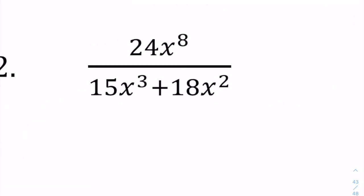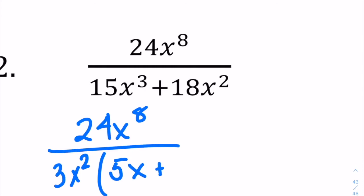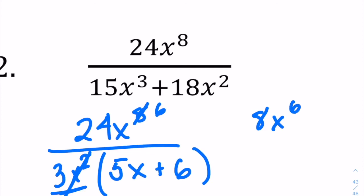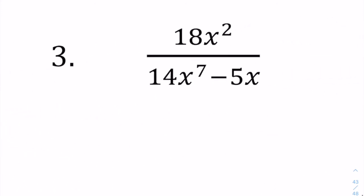Numbers got a little bit bigger. I'm going to continue using the factoring method. The numerator is a monomial, so there's no factoring to do there — we'll leave that as 24x to the 8th. For the denominator, the coefficients both have a factor of 3, and the variables both have at least x squared. That leaves us with 3x squared times (5x plus 6). The 3x squared and 24x to the 8th cancel nicely: x squared turns x to the 8th into x to the 6th, and 3 goes into 24 eight times. So we get 8x to the 6th over (5x plus 6).